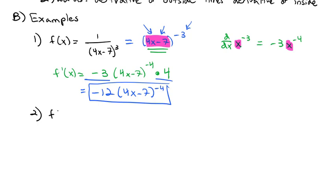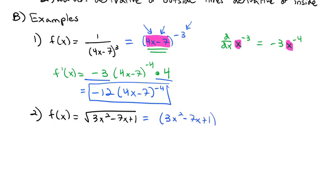Let's look at another one. Say we have f(x) equals the square root of (3x² − 7x + 1). We recognize the square root is really an exponent — we have (3x² − 7x + 1) to the 1/2 power. So we have a function inside of a function: the expression (3x² − 7x + 1) sitting inside a 1/2 power, similar to x to the 1/2. We know the derivative of x to the 1/2 is (1/2)x to the negative 1/2.